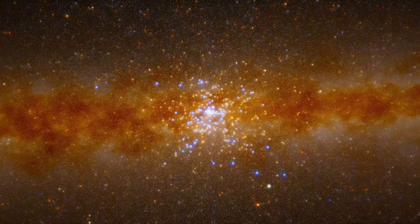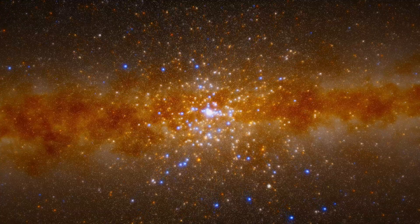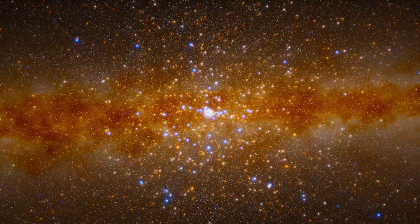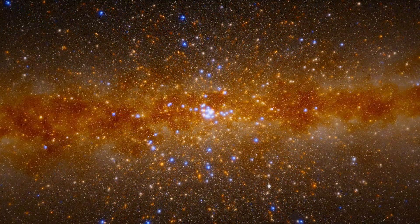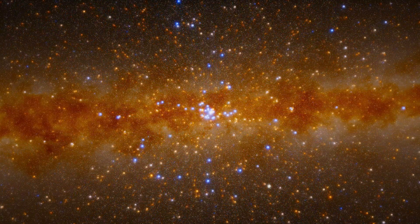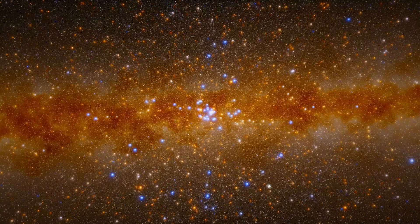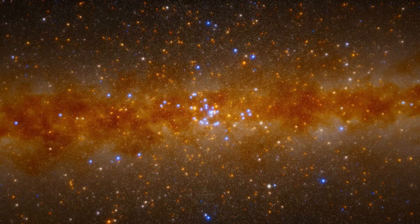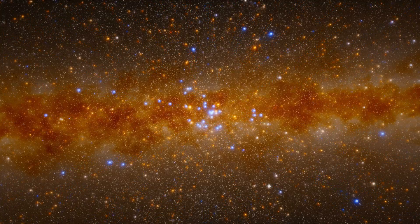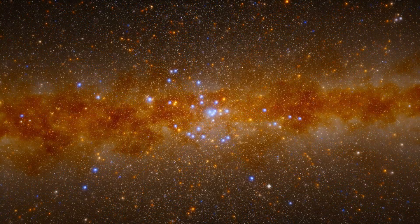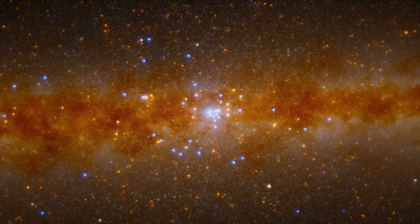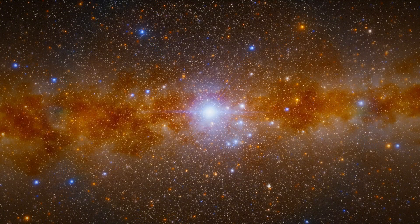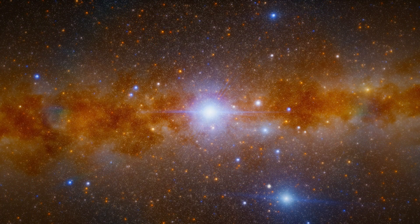The closer we get to the center, the more crowded space becomes. There are over a million stars packed into just one parsec at the core. For comparison, the nearest star to our sun is over one parsec away. Here, stars are separated by light weeks instead of light years. If Earth orbited a star in this region, the night sky would be filled with thousands of bright stars. There would be no true darkness. This is the most extreme environment in our galaxy.